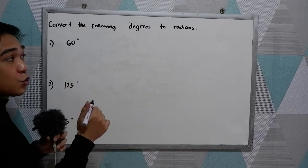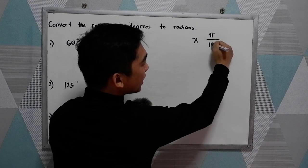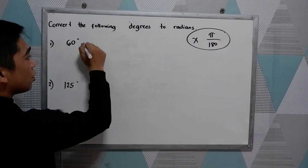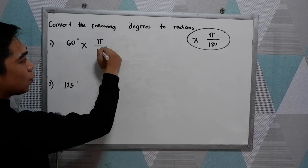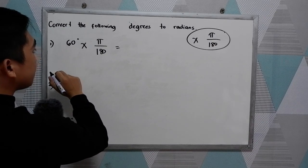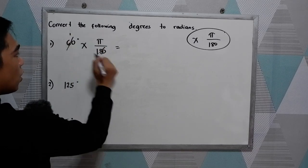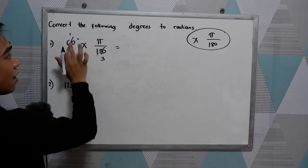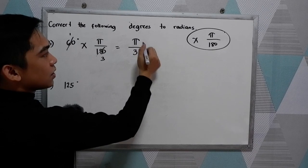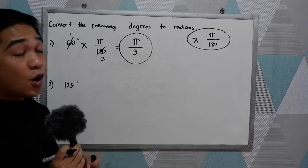To convert, we're just going to multiply by pi over 180. We're going to convert degree to radian, so multiply by pi over 180. Then we're going to simplify. So we have cancellation method, 60 and 180. This will become 1 and this is 3. So we have 1 times pi, so we have pi all over 3. So that would be our answer, pi over 3 radians.